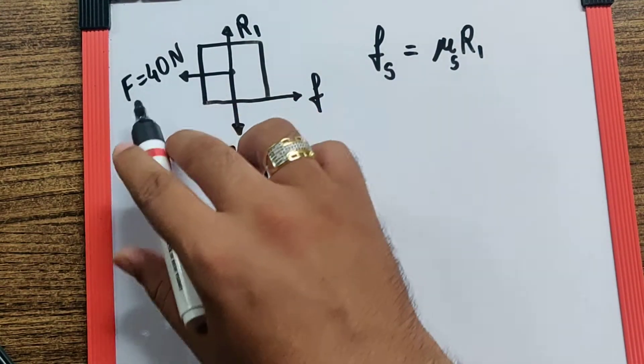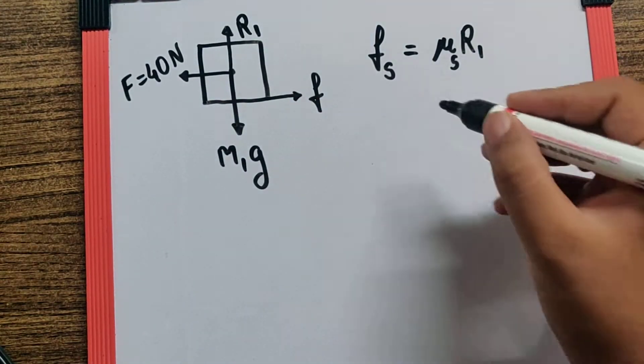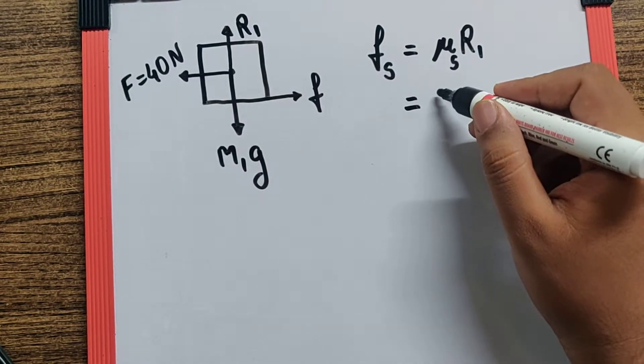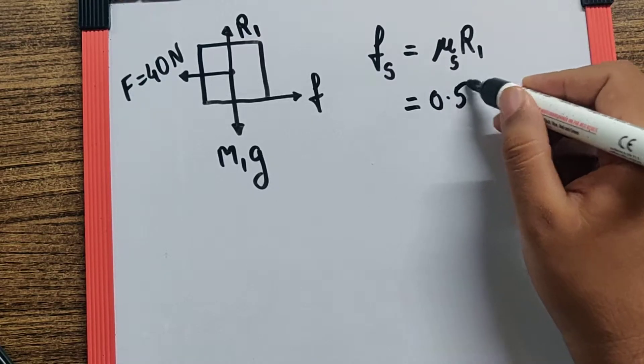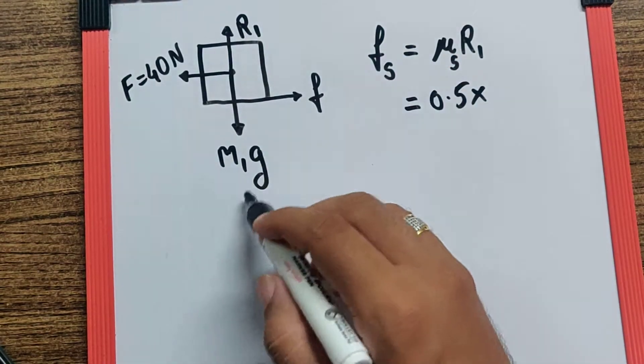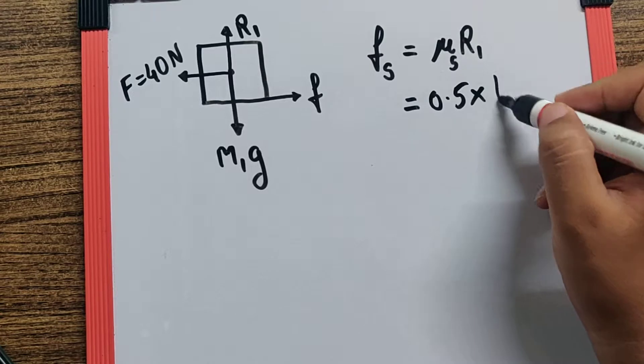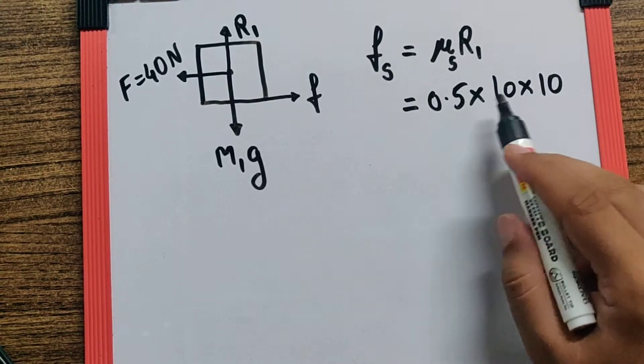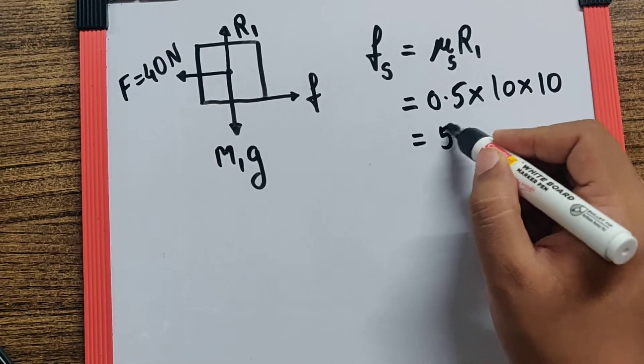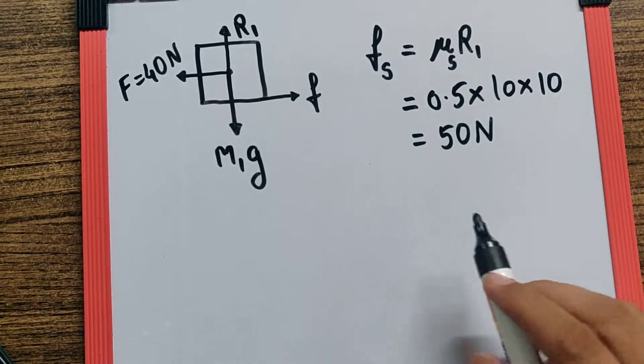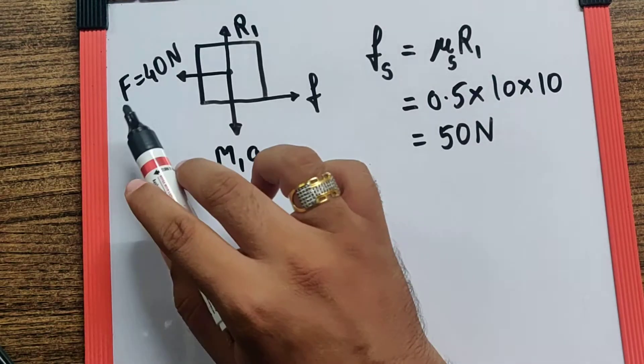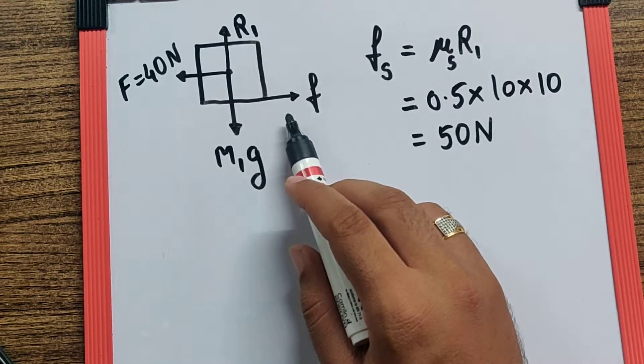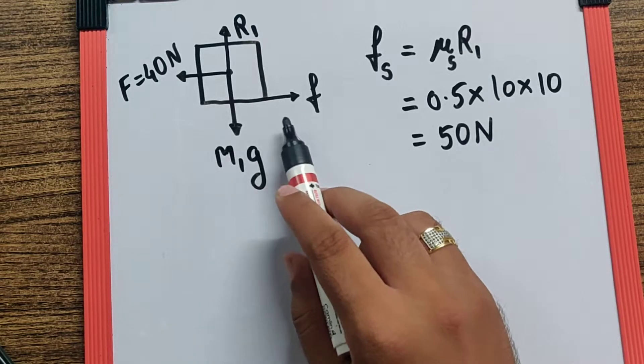So here I'm assuming that the friction is sufficient enough, or more than 40 newtons, which is the applied force. If I calculate this, μs is given as 0.5. Since R1 is M1g, M1 is 10, and g is 10, that makes this force 50 newtons, which is well ahead of the 40 newtons required to stop the motion.